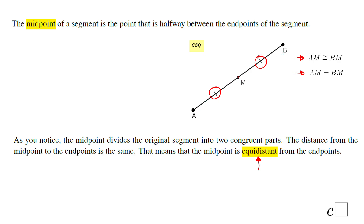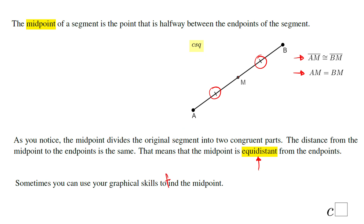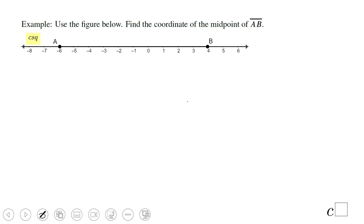Sometimes you can use your graphical skills to find the midpoint. In this case we have point A located at negative 6 on the number line, and point B at 4. What would be the distance between negative 6 and 4? That's 10 units.